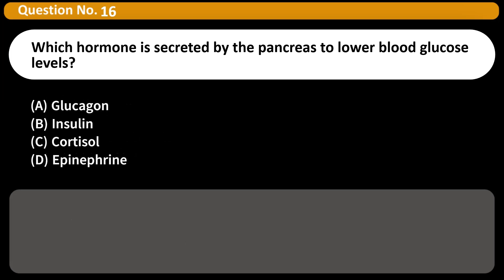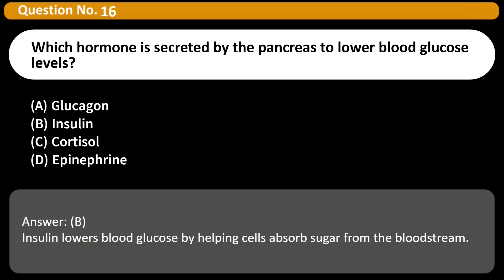Which hormone is secreted by the pancreas to lower blood glucose levels? A) Glucagon, B) Insulin, C) Cortisol, D) Epinephrine. Answer: B. Insulin lowers blood glucose by helping cells absorb sugar from the bloodstream.